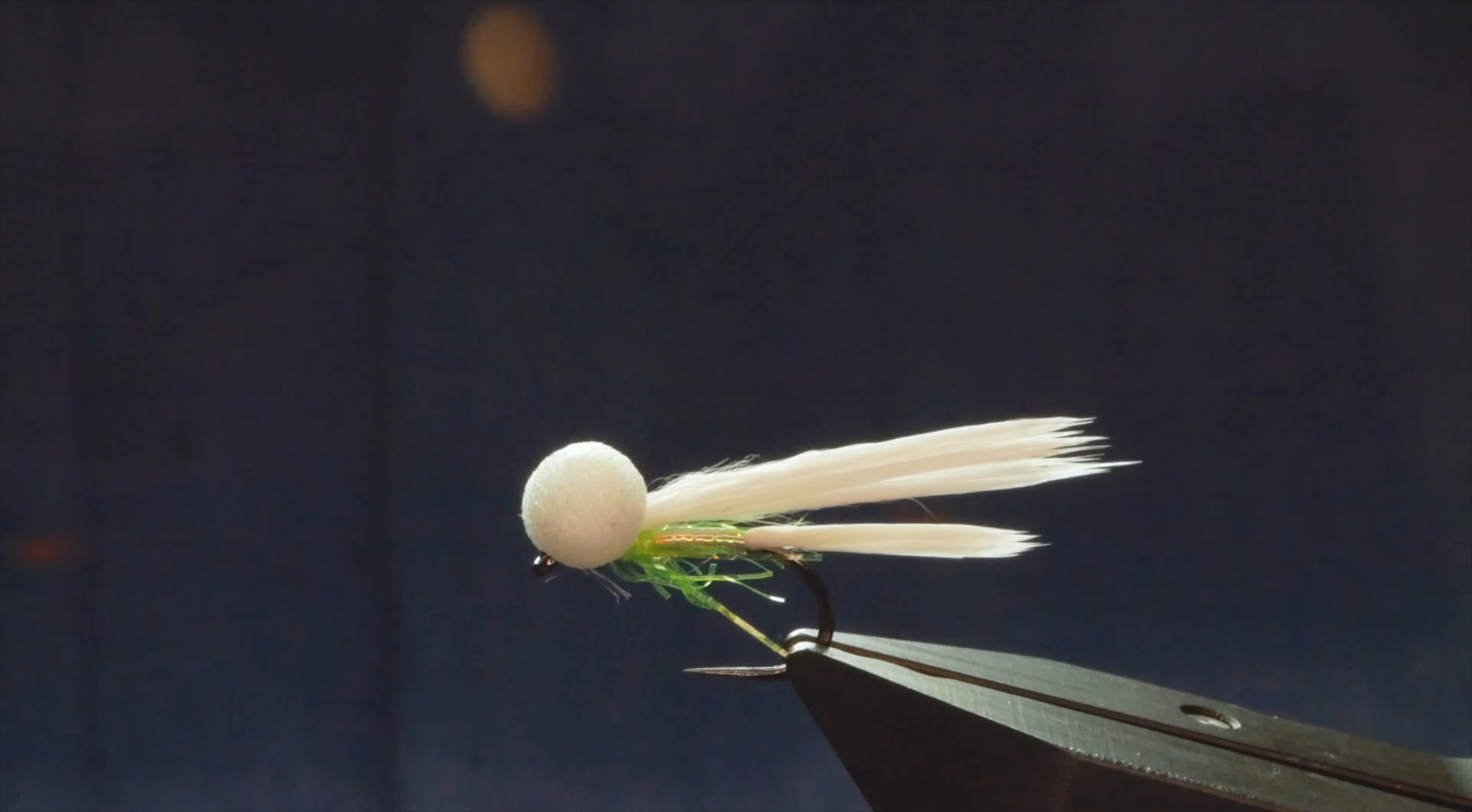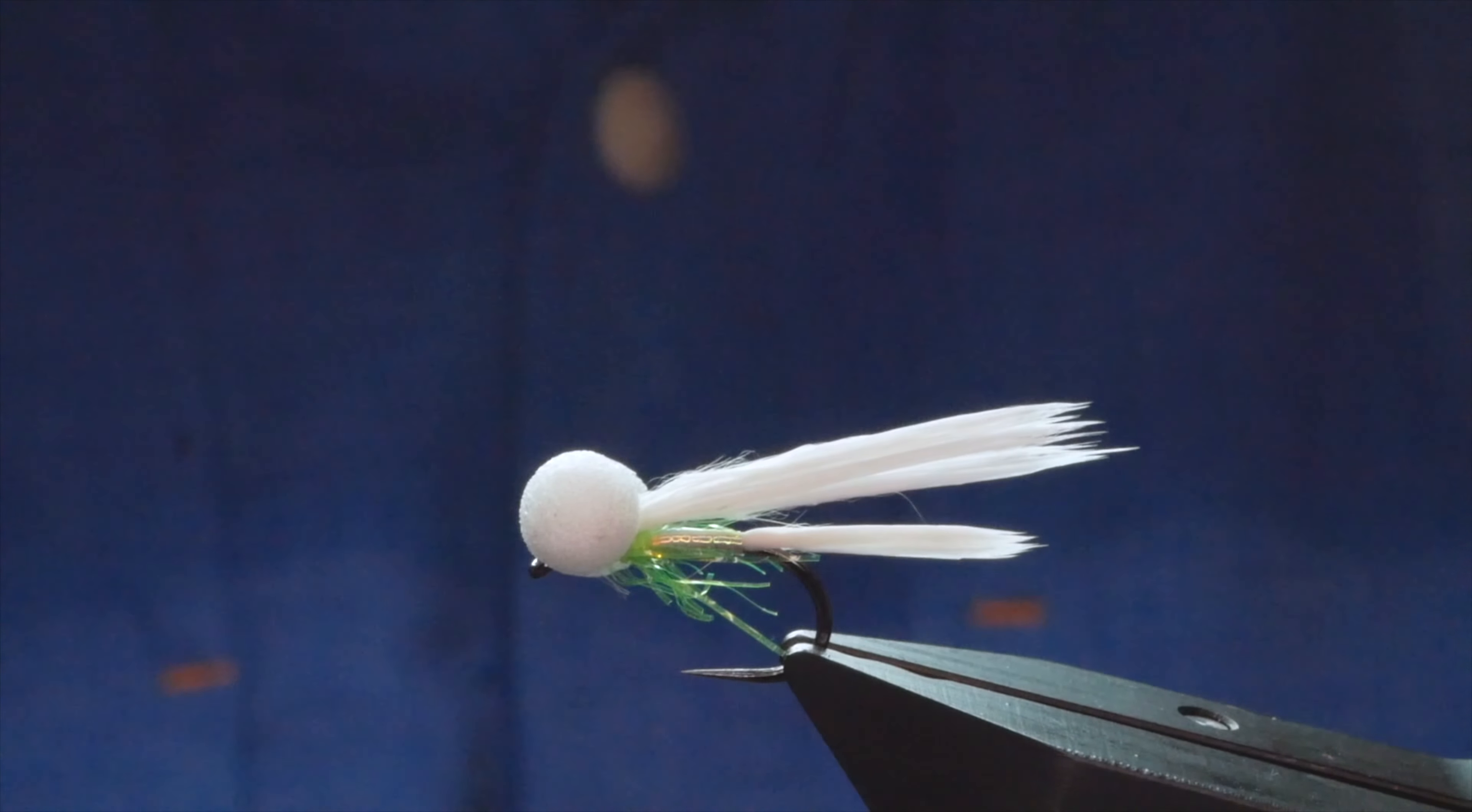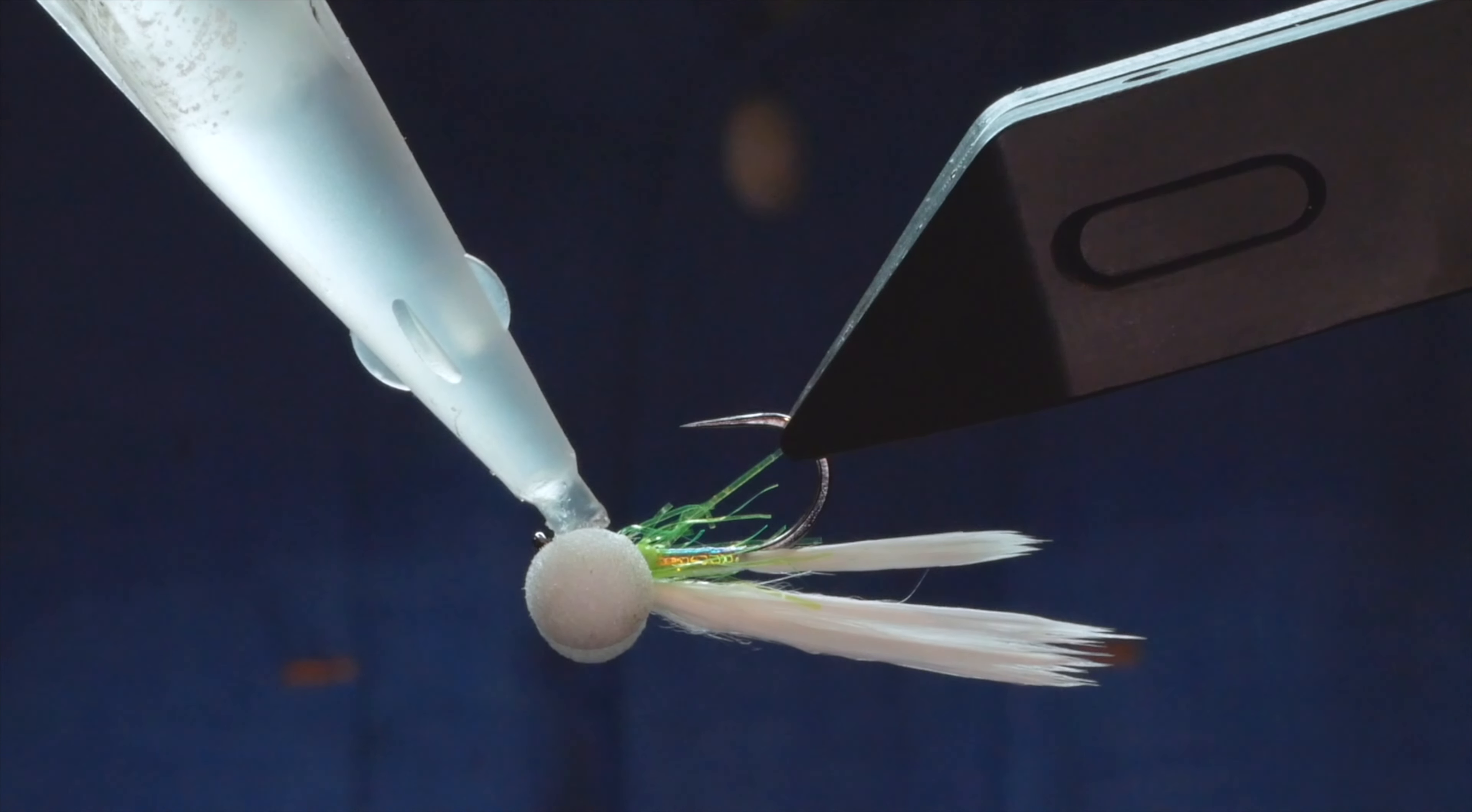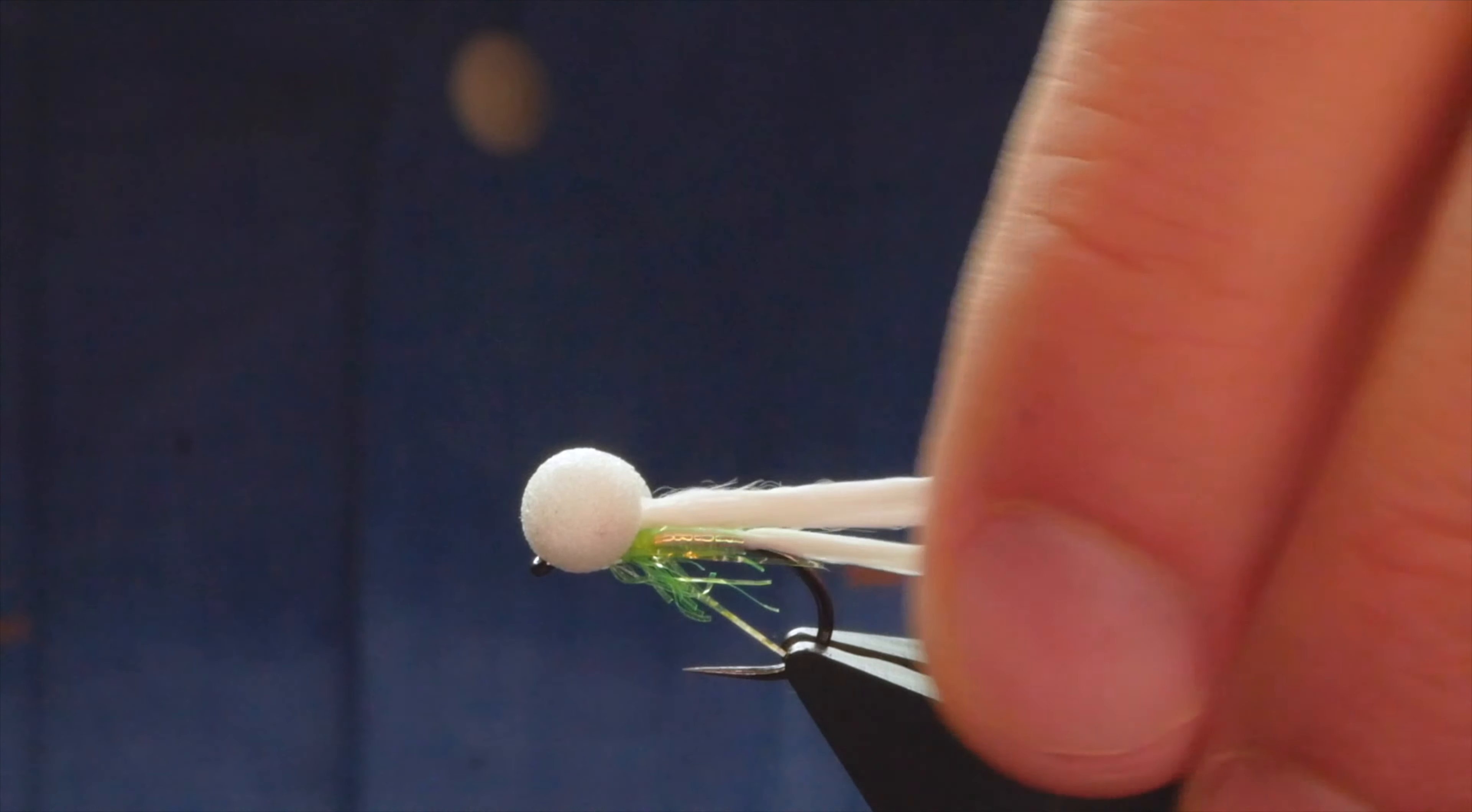To finish off, all we do is come in with a touch of superglue. That'll soak down through the thread. I'm going to add a little spot just to the bottom here to make sure it's secured in, and then I'll leave that to dry. It's a deadly little fly, this. It's worked wonders for me. It's also competition legal.